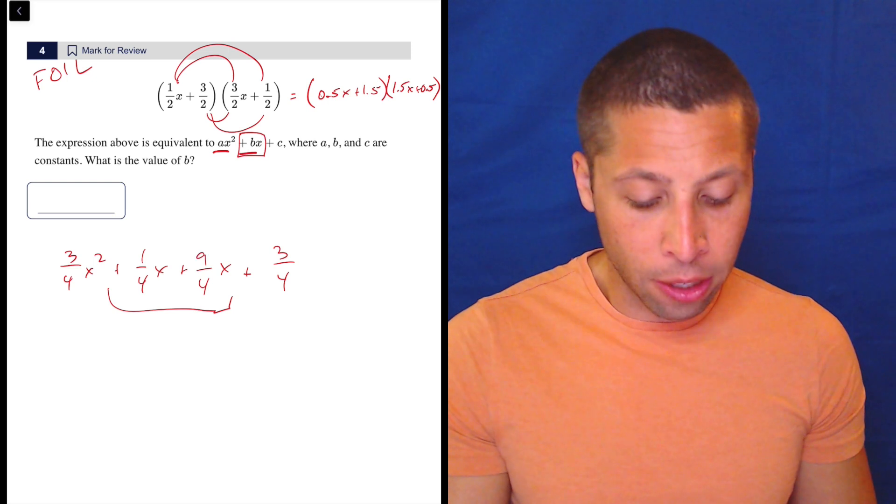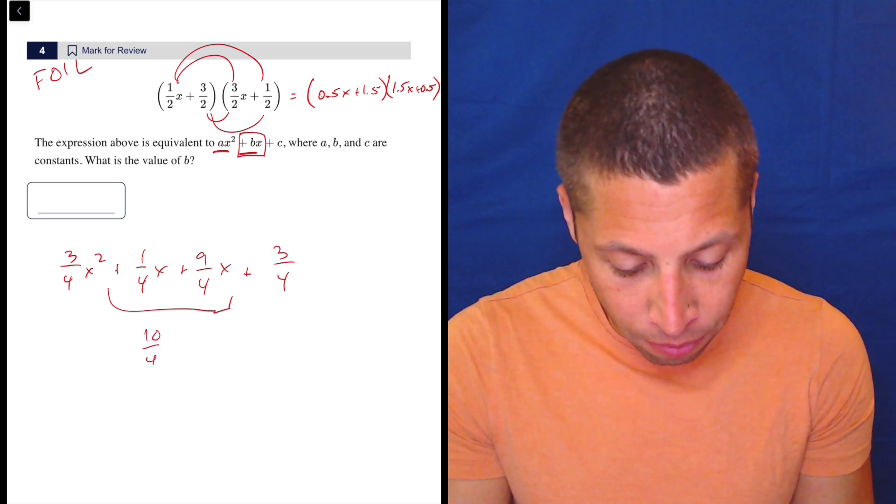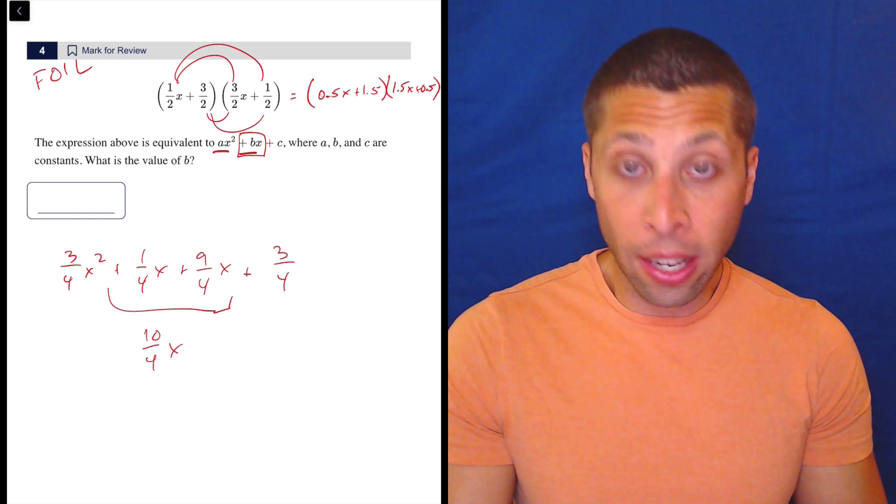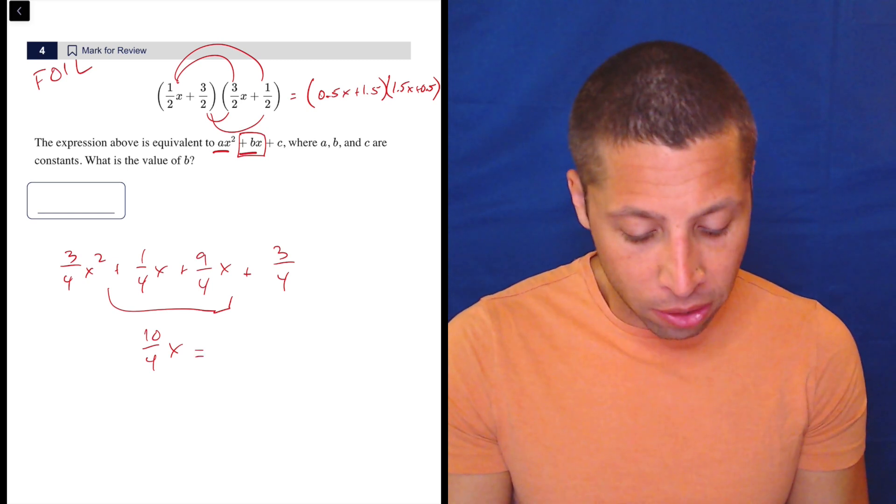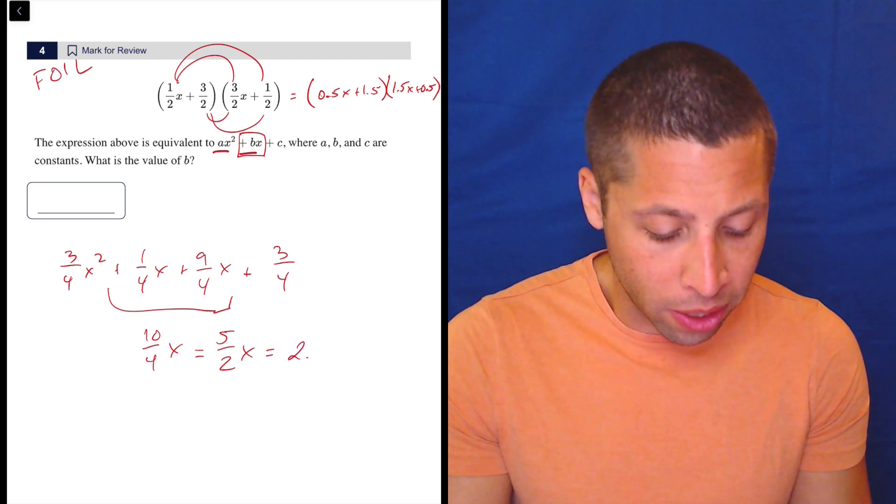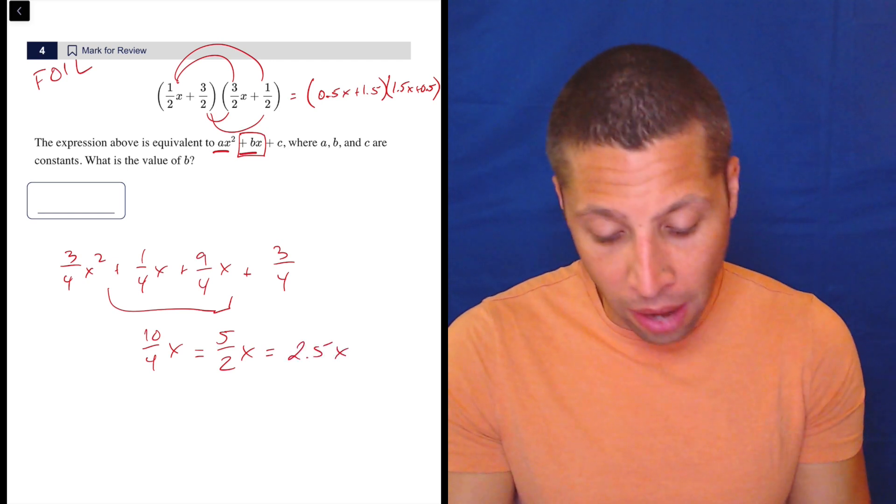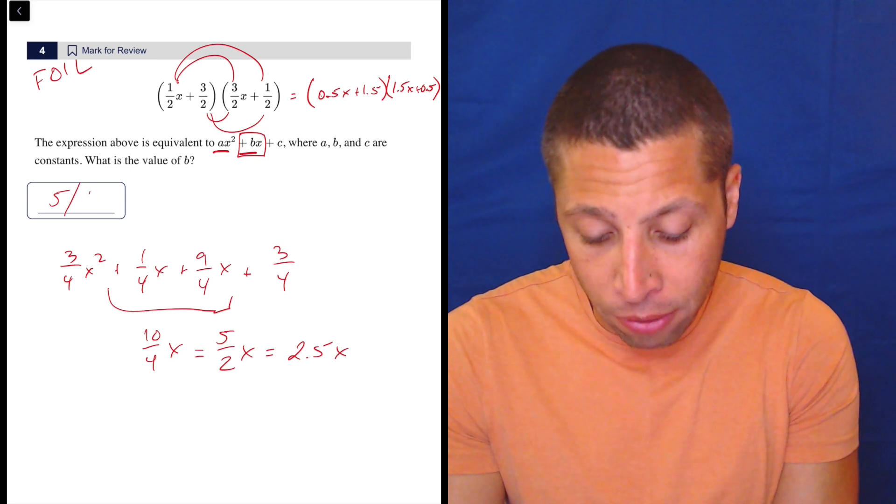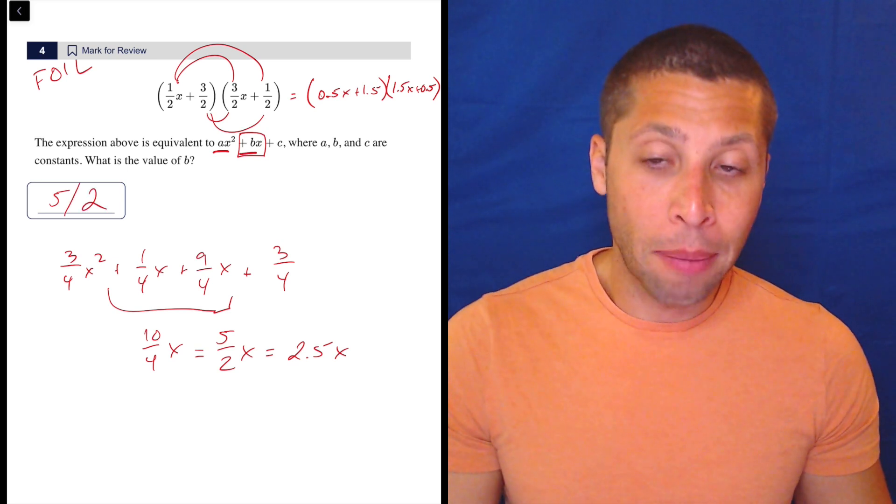Now we need the B term by combining the two X parts. That's 1/4 plus 9/4 equals 10/4 X. We could enter that as 10/4, or reduce it to 5/2 X, or if you did decimals, 2.5X. All are good. I would put it in as 5/2, mostly because I like fractions. If I'm going to commit, let's commit to it.